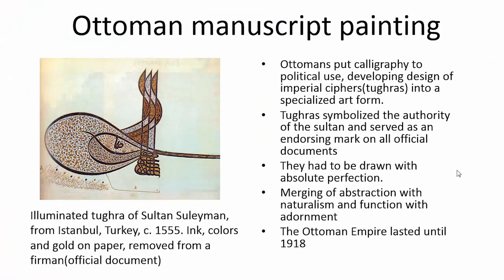Here's an example of Ottoman manuscript painting. The Ottomans put calligraphy to political use and developed a design of imperial ciphers called tugras. We originate the art of calligraphy as sacred writing, but throughout the centuries it becomes political, symbolizing the authority of the Sultan and serving as an endorsing mark on all official documents. If it isn't drawn with absolute perfection, the document will not be official. We see in these tugras a merging of abstraction and functionalism with adornment — naturalistic flora and fauna swirling around in a very abstracted way.